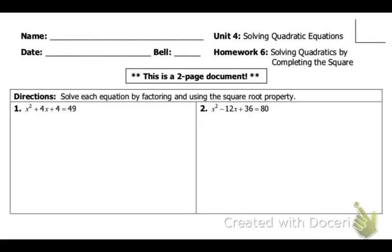Okay, let's start homework 6. Make sure you're reading the directions. For 1 and 2, they're asking you to solve by factoring and then doing the square root property, so you are not completing the square for this one, but it's only for number 1 and 2. I'm going to go ahead and do 2. They're asking me to factor and then do the square root property.